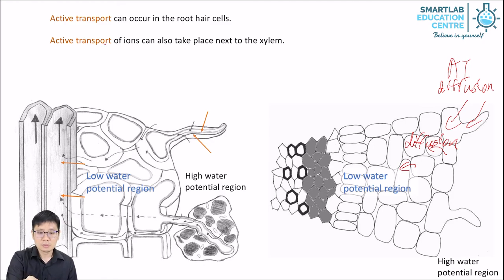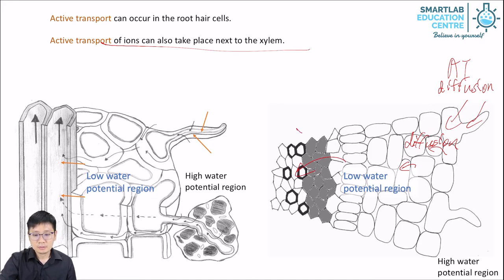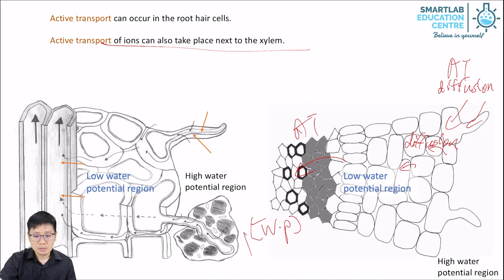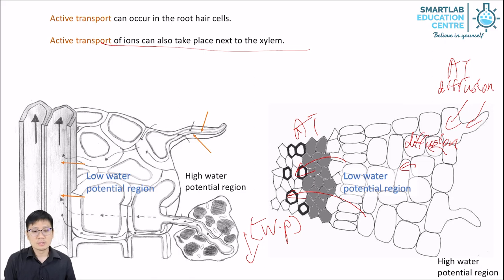Active transport of ions can also take place next to the xylem. This will allow the water potential in the xylem to constantly remain low. And when the water potential in the xylem is low, osmosis will occur from the root cells into the xylem as well. So you can see that the transport of water and the absorption of ions go hand in hand — they work together.